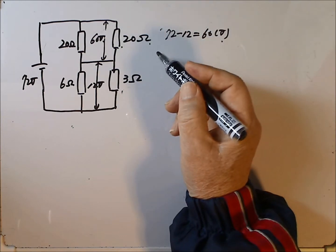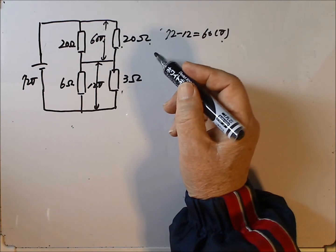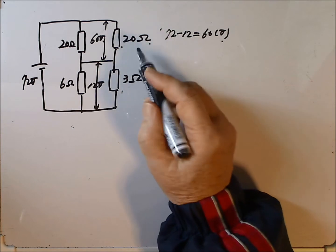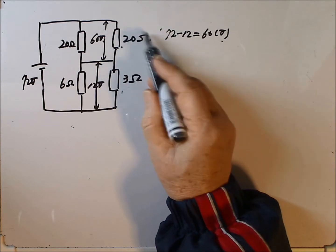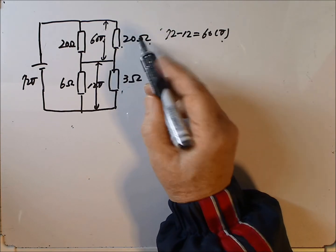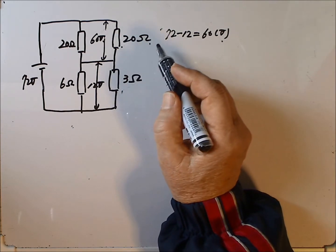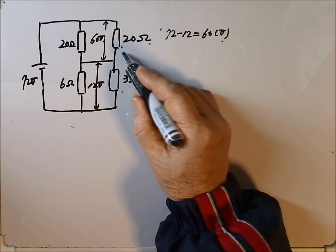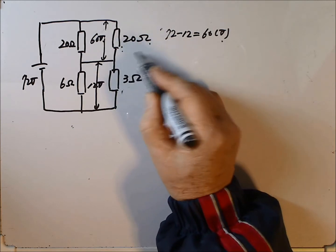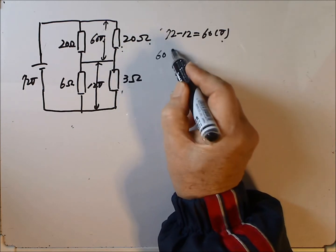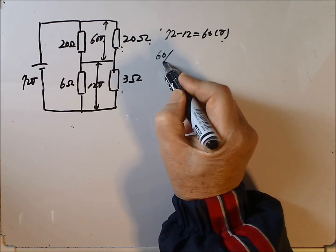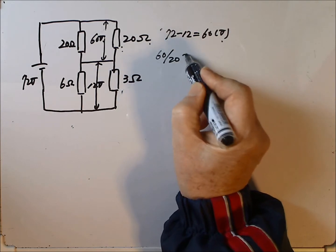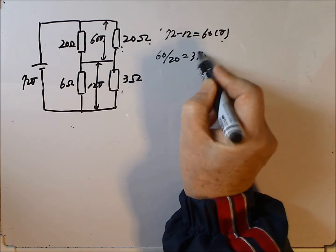Therefore, the current flowing through the resistance 20 ohm is 3 amperes, because it is 60 divided by 20 equal 3 amperes.